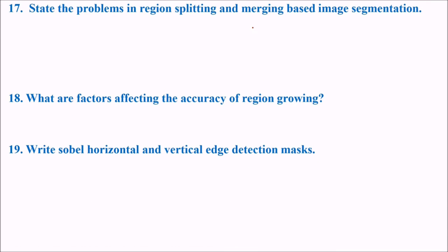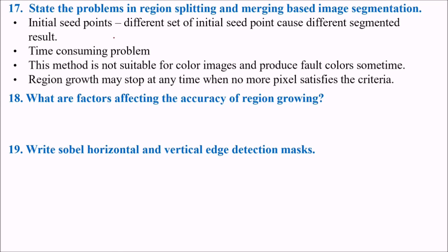State the problems in region splitting and merging based image segmentation. First is initial seed points. Different set of initial seed points cause different segmented results. There is not a single result which can be formulated. If you choose different seed points results will be different. This is time consuming. This method is not suitable for color images and they produce the false color sometimes. Region growth may stop at any time when no more pixel satisfies the criteria.